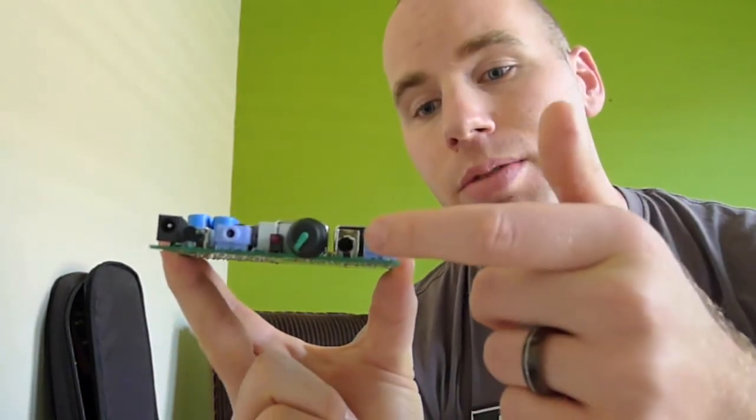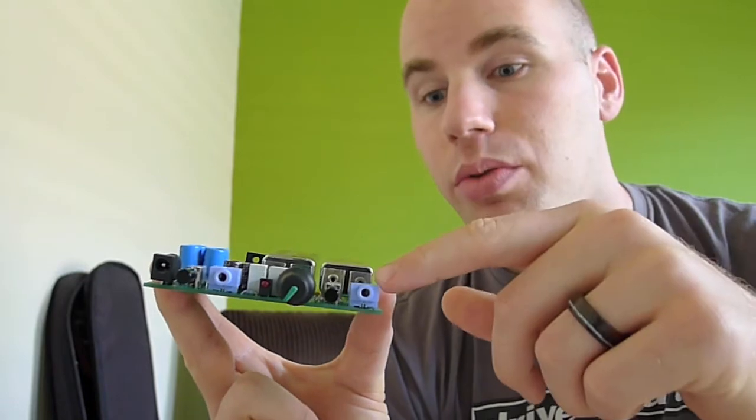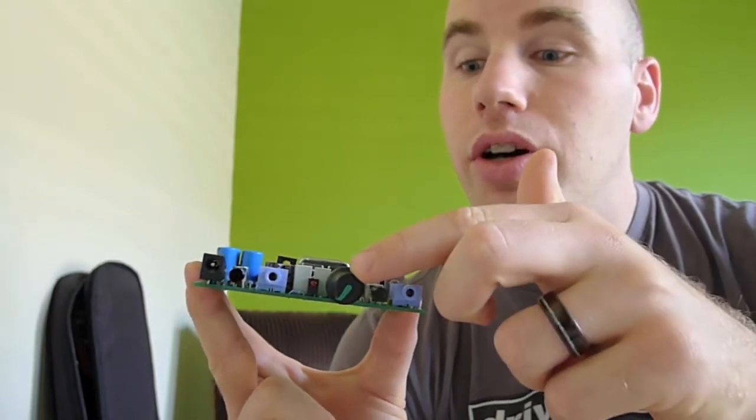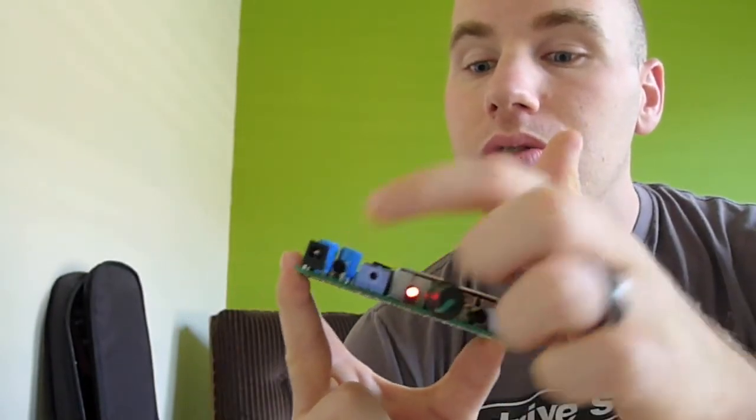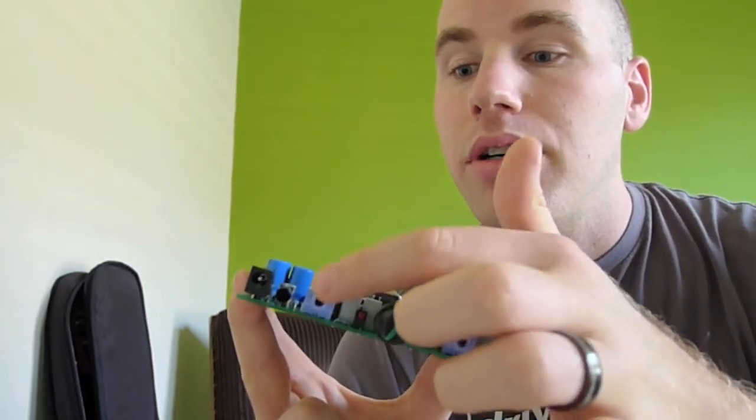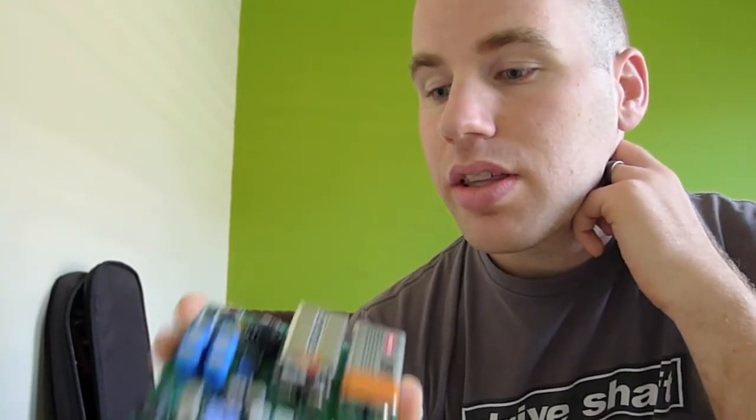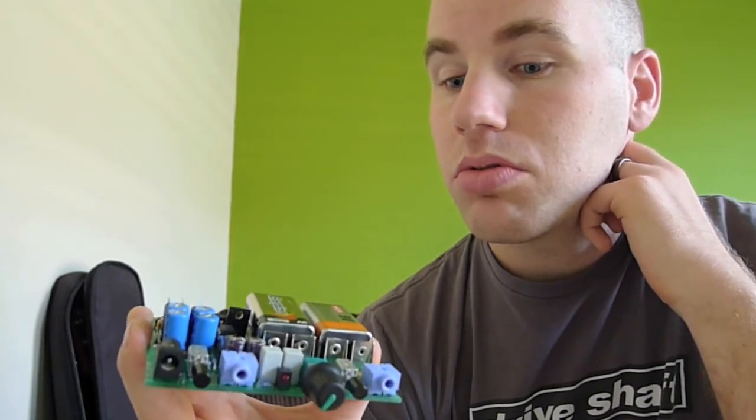But basically you put your input in here and this comes from either your laptop, your iPod, line out, whatever you want to do. And then here's your volume knob. Here's your LED that shows the power is on. And then this is your output to the headphone. And this is the power switch. So I think it looks pretty cool. Like I said, just like this, but I will get a translucent case for it at some point soon, just to make it look extra cool.